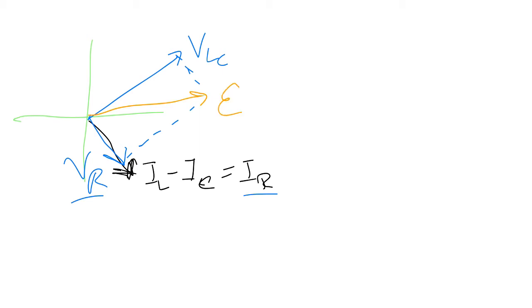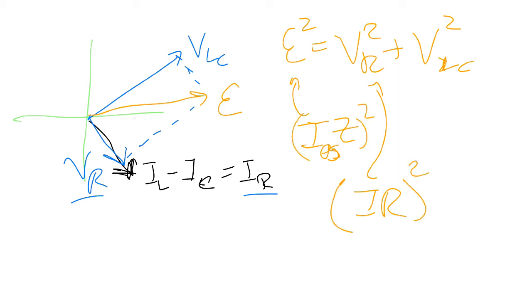So the EMF squared is equal to VR squared plus VLC squared. So we're left with, I know that this is equal to I power supply times the impedance. And this is I times R squared officially. But what is that? Well, that's going to be equal to the current flowing in times something here. So we need to figure out what that something is.